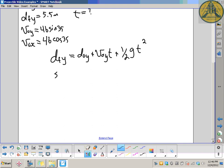Putting numbers in. 5.5 equals 0 plus 46 sine 35 t minus 4.905 t squared. Simplify that middle term a little bit. 5.5 equals, so it's 46 sine 35, 26.4 t minus 4.905 t squared.